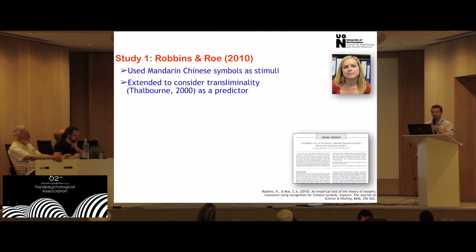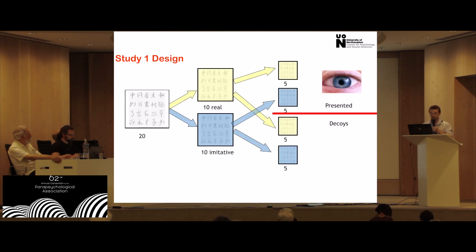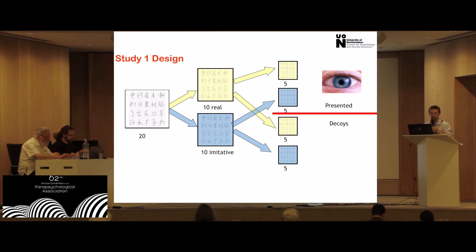The medium we used was Mandarin Chinese character stimuli. The main rationale is that because it's such a widely spoken language, we would expect the morphic field to be very strong. We were also interested in individual covariates of success — we heard Annalisa speak about transliminality, and we wanted to see whether that was related to participants' exhibition of the morphic resonance effect. The design of the original study involved a set of 20 stimuli: 10 genuine Chinese characters that existed in the language and were widely used, whereas 10 were imitative — designed to look like Chinese characters but made up for the study and consequently not rehearsed by many people.